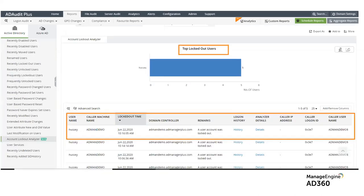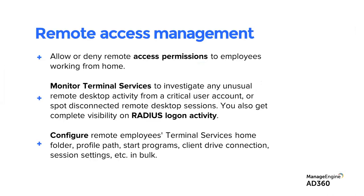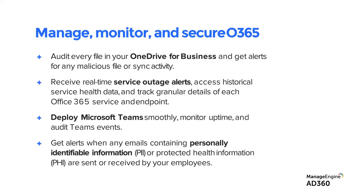Locked out accounts can be tracked as well. File changes and folder changes — files modified, folders modified, items renamed, permissions altered — can all be monitored for file integrity. Remote access management is also critical: monitoring terminal services helps allocate resources better, revoke accesses on services and applications, and quickly remove access during a security breach. You should always have a god's eye view of who has logged into your system remotely.